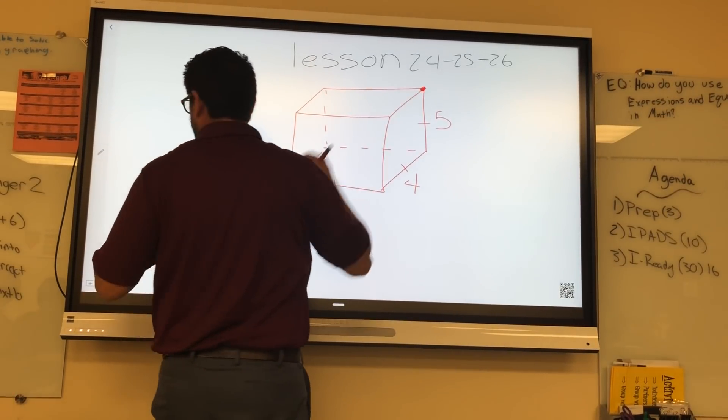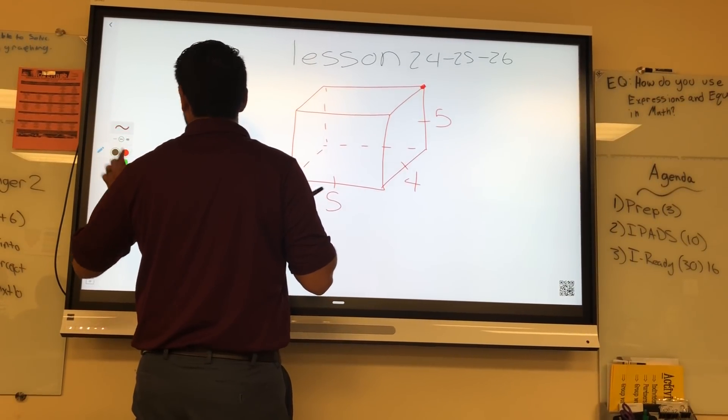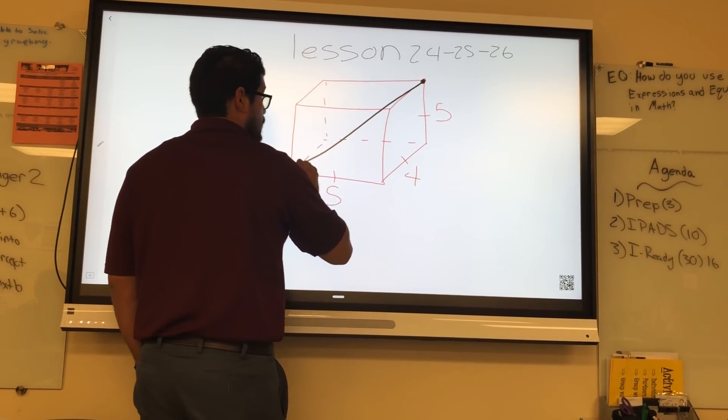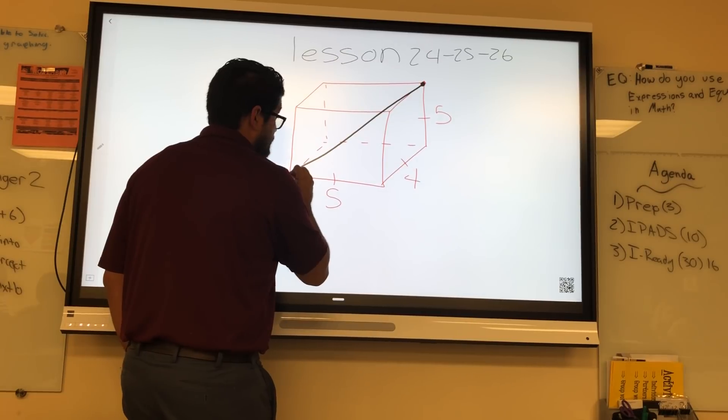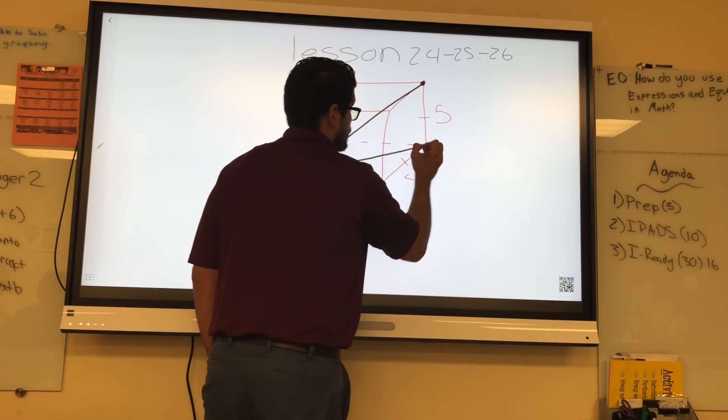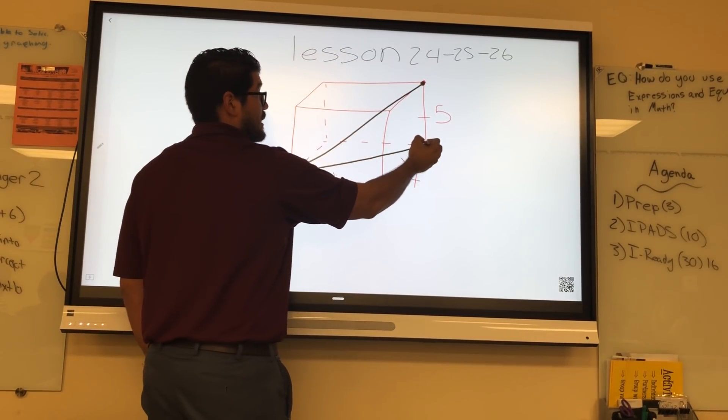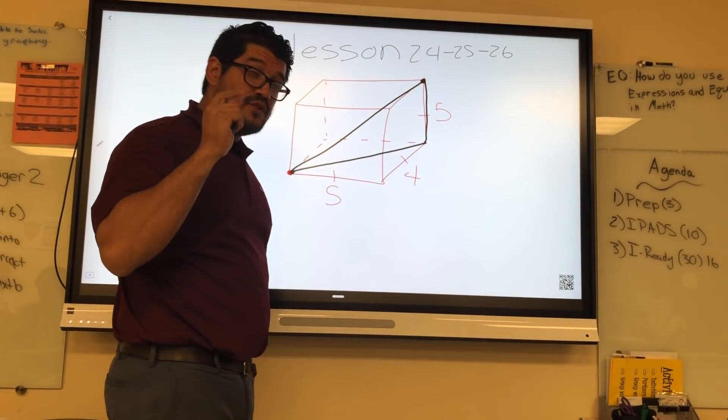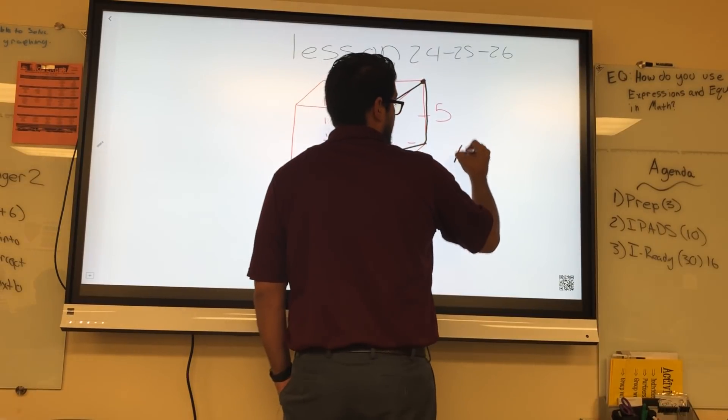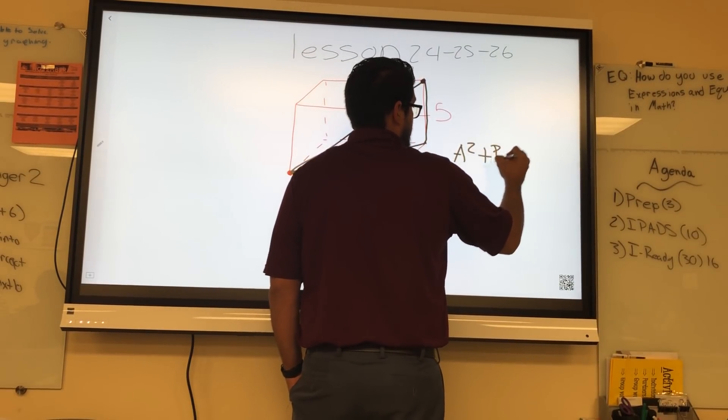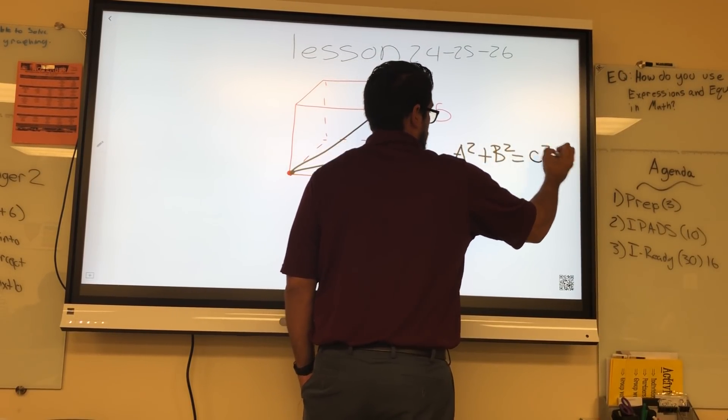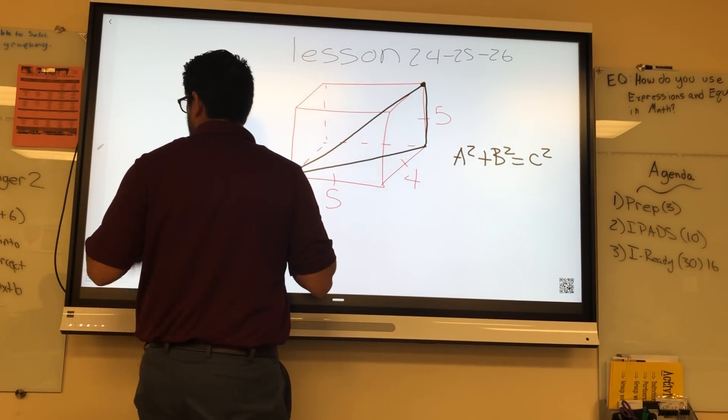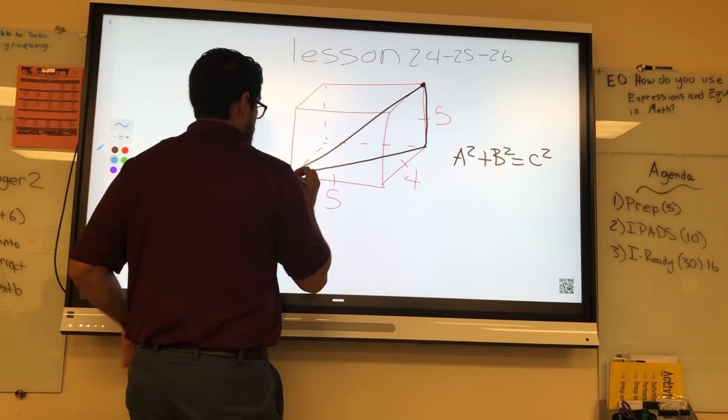First thing we have to do to figure out this diagonal length here, from here to here, what we need is this diagonal length, the bottom from here to here. Once we have that, I'll be able to make this triangle and use Pythagorean's theorem to solve it. So we're using Pythagorean's theorem two times, which is A squared plus B squared equals C squared.